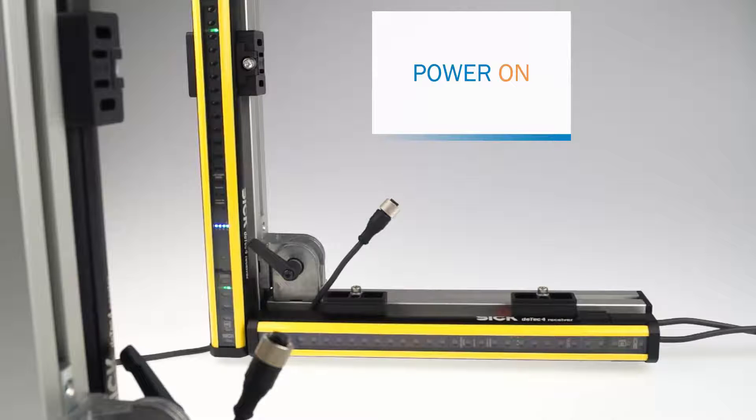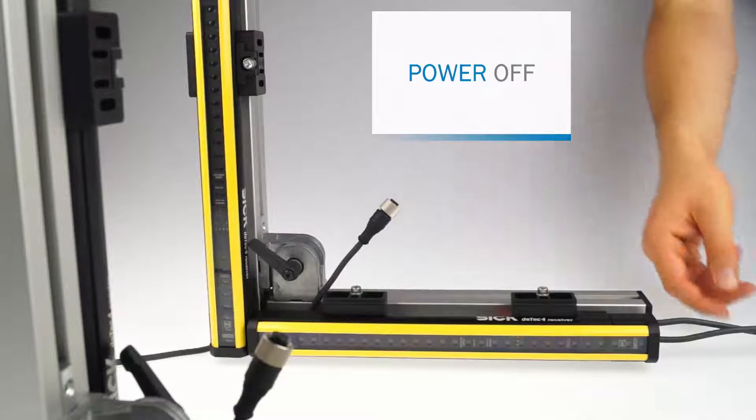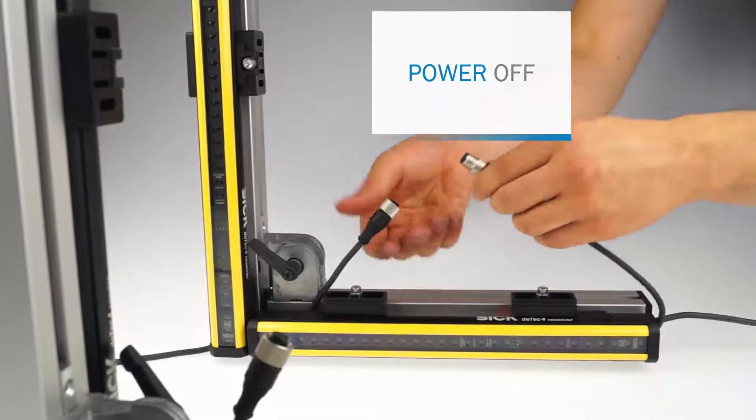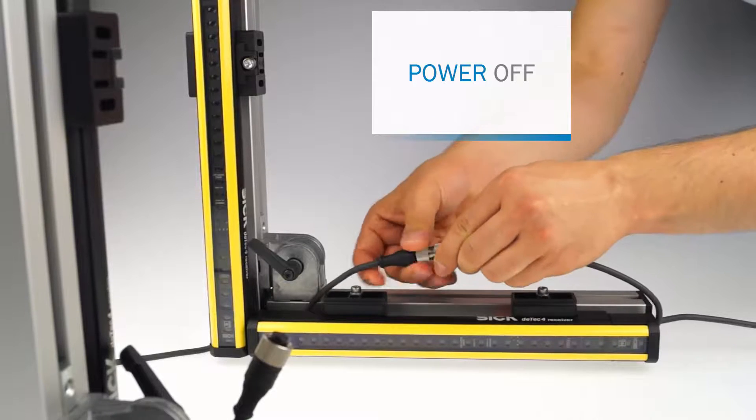Now, after disconnecting the system from the power supply, you simply connect the other devices to the extension connection from the system plug of the previous device in the cascade.